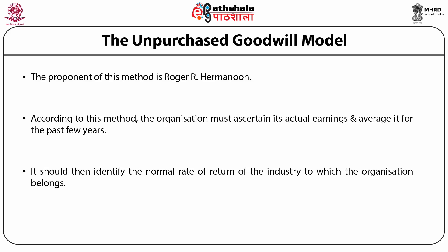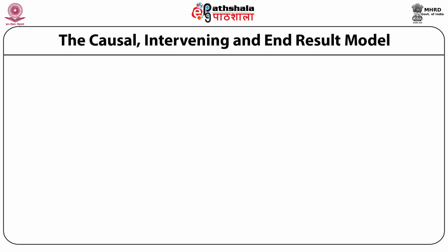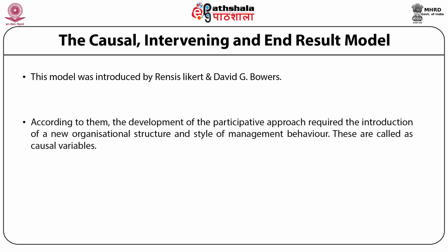The causal intervening and end result model was introduced by Rensis Likert and David G. Bowers. They advocate the need to develop a participative approach to human resource management. According to them, the development of the participative approach requires the introduction of a new organizational structure and style of human behavior — these are called causal variables. The result of changes in organizational structure and style of management behavior would be an increase in productivity and performance and a decrease in cost and scrap level. This is known as outcomes or end results.